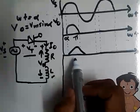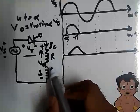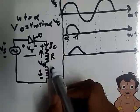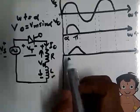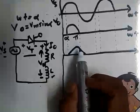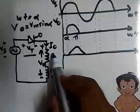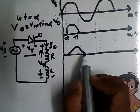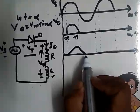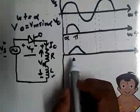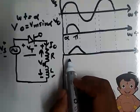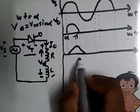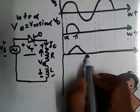At ωt = π, as in the case of a pure resistive load, the current should be zero. But in this RL load case it will not be zero, since the inductor opposes sudden changes in current. So the current through the inductor will gradually reach zero at some later point. This point is called the extinction angle, at ωt = β.